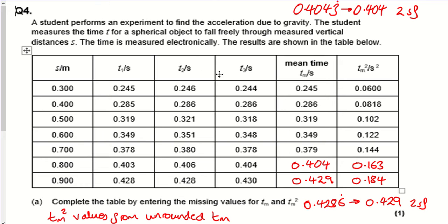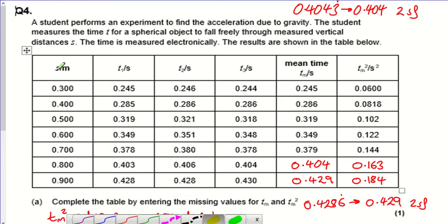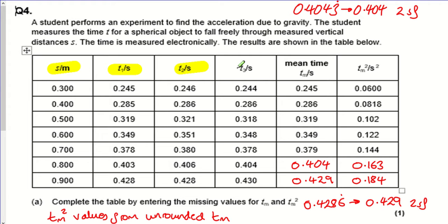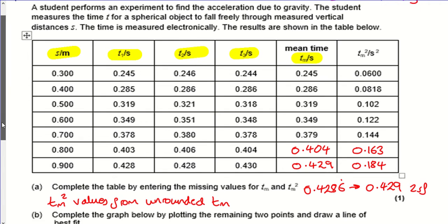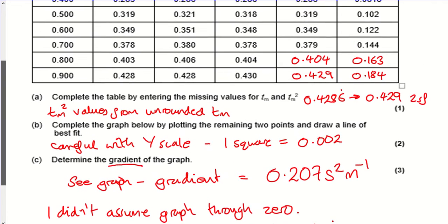This question is mostly about graph drawing, taking measurements from graphs, and uncertainties. It was number four on the test paper. We're doing a gravity experiment where we set different heights, drop an object, measure the time it takes to fall three times, work out a mean, and then square it — you'll see why from the formula.